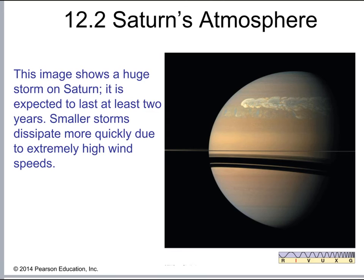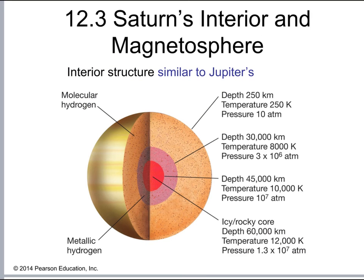We see an image showing a rather huge storm in the atmosphere of Saturn. Here we also see the interior of Saturn — its structure is very similar to Jupiter's. As you go down, it gets more dense and the pressure gets very, very high.